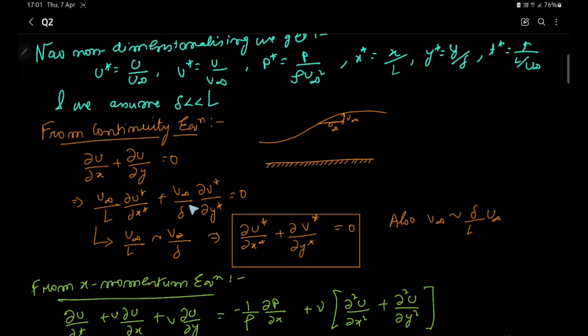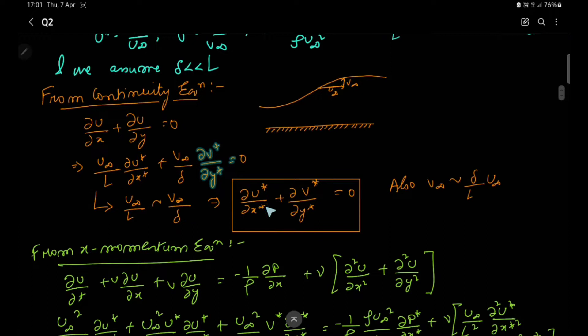By order-of-magnitude analysis, we can say that u∞/L is of the same order as v∞/δ. These two can therefore be considered equal and cancelled from the equation, so we are finally left with ∂u*/∂x* + ∂v*/∂y* = 0, which is the non-dimensionalized form of the continuity equation.